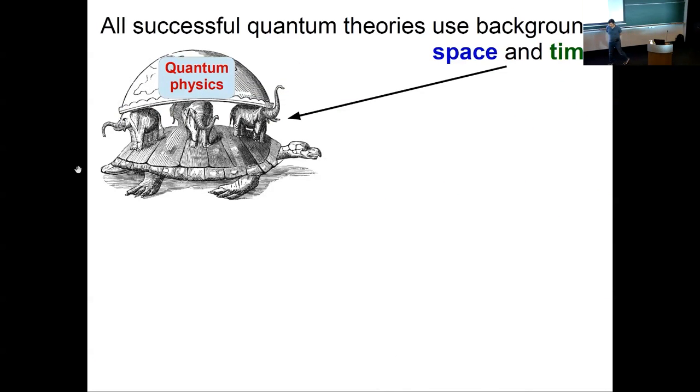So the problems in getting gravity and quantum theory to play nice with each other, they kind of cut both ways. Quantum theory is actually also not very accommodating of some of the features of gravity. And one of the big reasons is that all successful quantum theories that we have—quantum field theory, quantum mechanics—they use space and time in some form as background structures. So here's all of quantum physics, and it sits on those pillars of space and time.